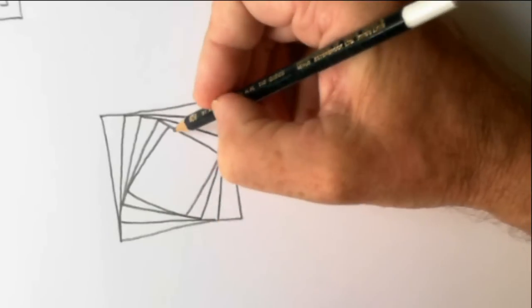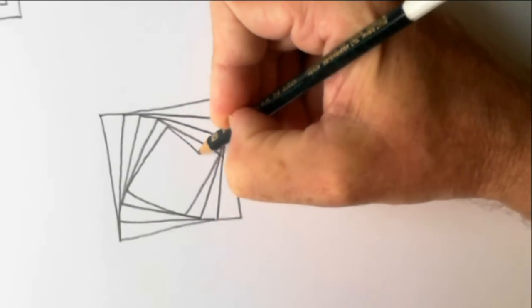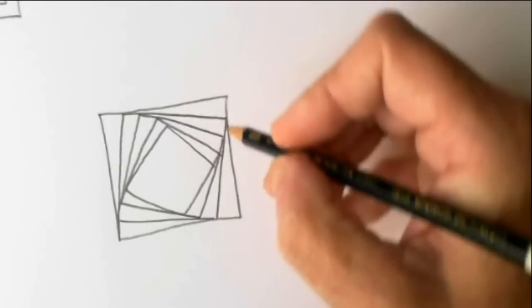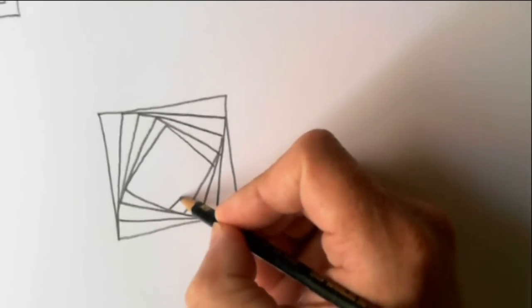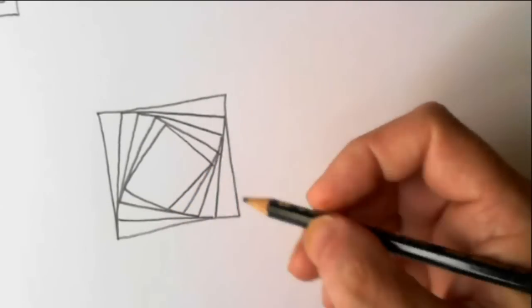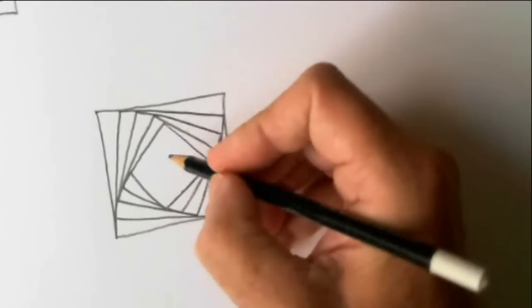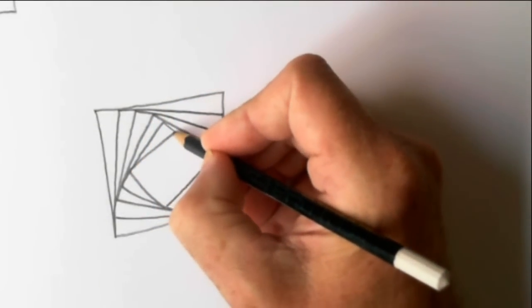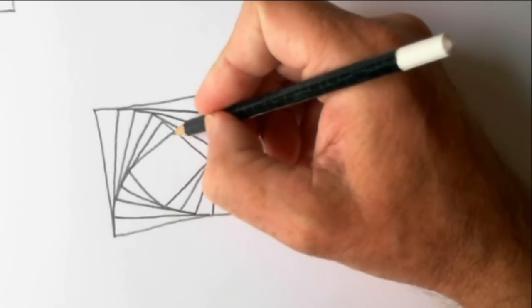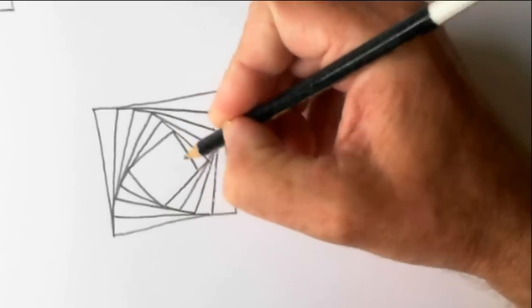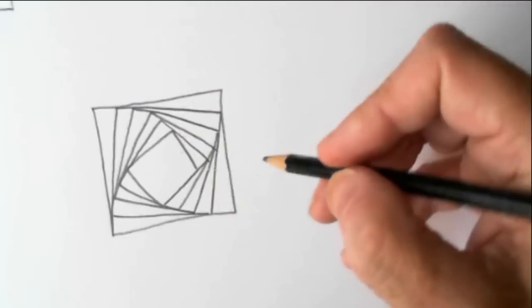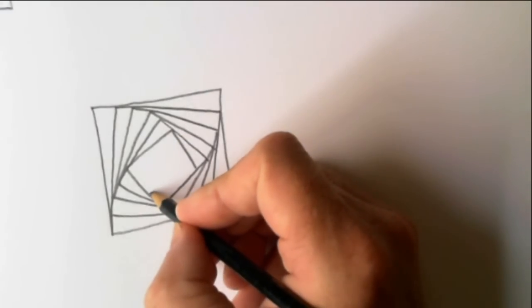Okay. It's starting to look more interesting now isn't it. There we are. Coming in. You can see those spirals coming in now. We'll get four of them of course because it's a square.